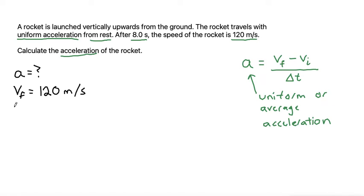Our initial velocity, it says it starts from rest. Rest means it's not moving. That would be zero. And to be consistent with the units, we can call it meters per second.